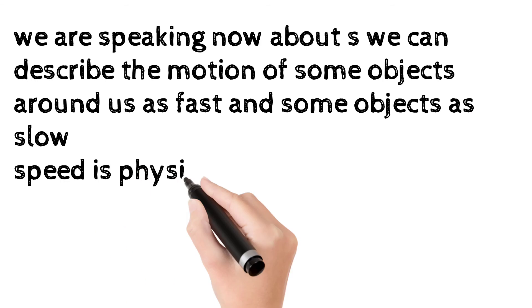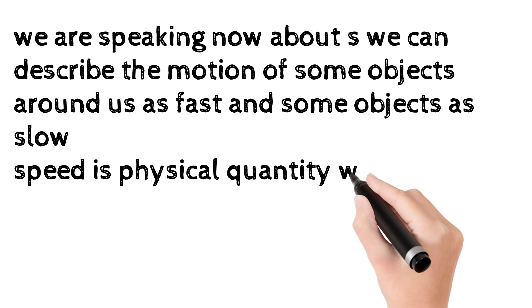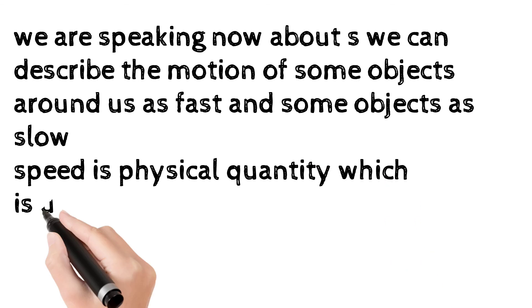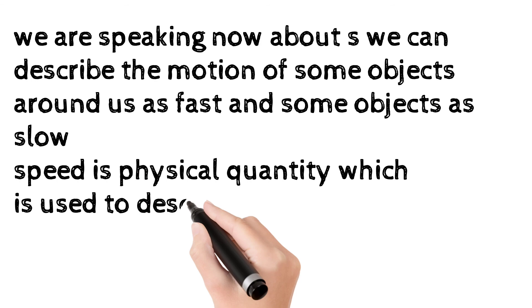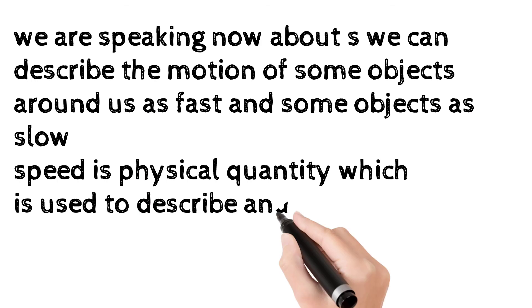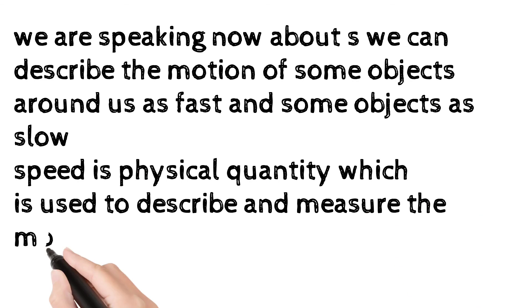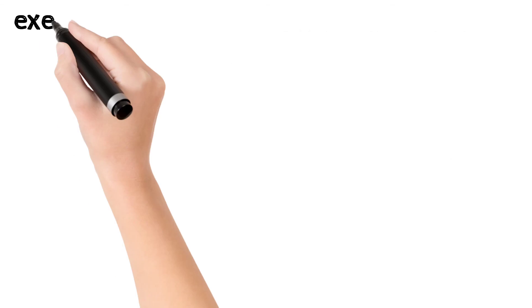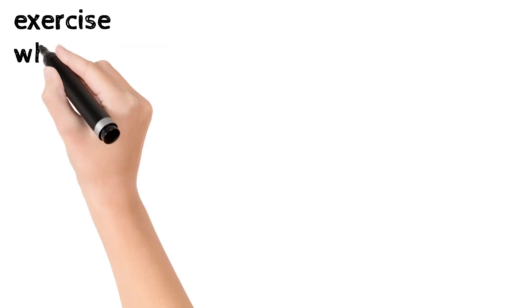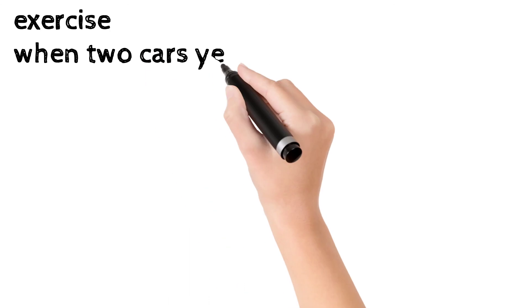We are speaking now about speed. We can describe the motion of some objects around us as fast and some others as slow. Speed is a physical quantity which is used to describe and measure the motion of objects.